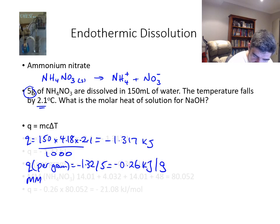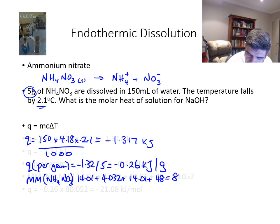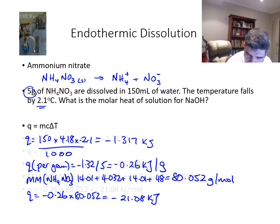This time the molar mass is different because it's a different substance. So I've got 14.01 twice, I've got 4 of the hydrogens and I've got 3 oxygens. So I've got a molar mass of 80.052 grams per mole. When I multiply that, my Q value is minus 0.26 times 80.052, giving me negative 21.08 kilojoules per mole.